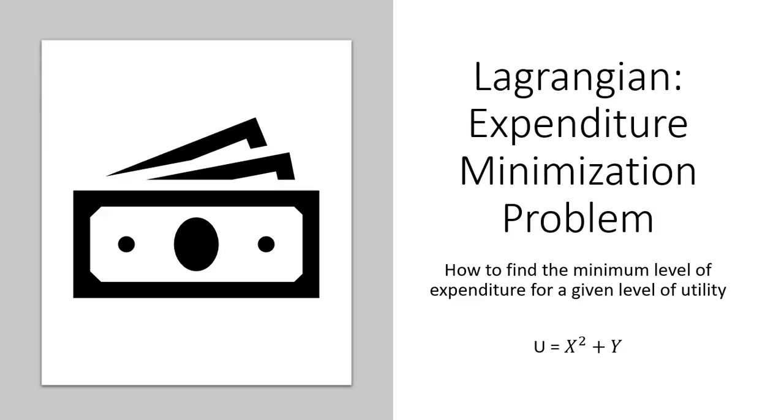Hello. In this video, we're going to do a Lagrangian expenditure minimization problem. We're going to try to find the minimum level of expenditure for a given level of utility.